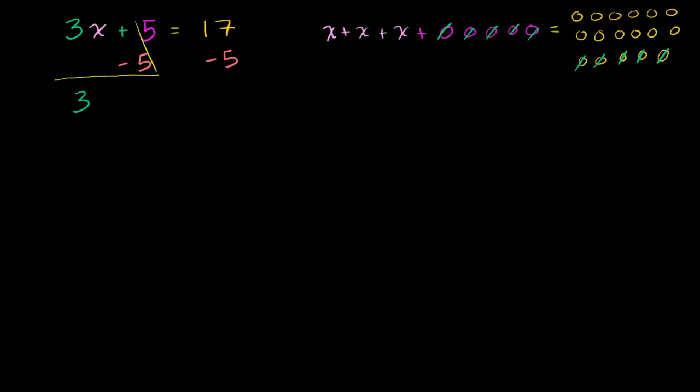You are just left with the 5 and the negative 5 canceled out. And you see that here. When you got rid of these five objects, we were just left with the 3x's. This right here is the 3x. And the whole reason why we subtracted 5 is because we wanted this 5 to go away.